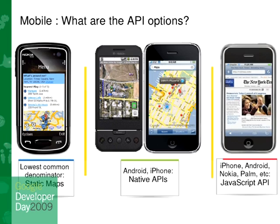On mobile, you have different options depending on the device. If it's an iPhone, Android, the latest Nokias, or Palm, then you have the JavaScript API version 3, which has been optimized for mobile phones. On iPhone and Android, there is a specific library available to build applications using maps. For the rest of the devices, you can use the Static Maps API, which is just a way to draw a map by giving all the parameters in a URL — really simple to implement. I'll get into that in the second session.